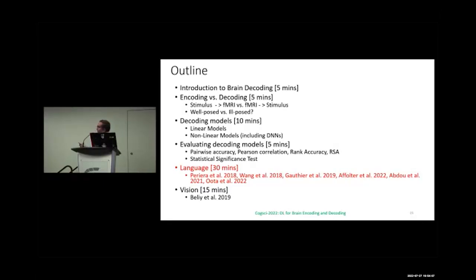For a lot of decoding science, it's unclear what people are really trying to prove, because just because the brain might have the ability to represent something doesn't mean the brain is using that for any sort of computation. You could encode a scene that might be decodable from neurons, but that doesn't necessarily mean the brain is using that in its computations.